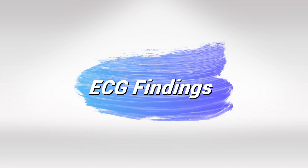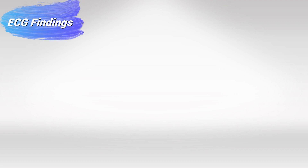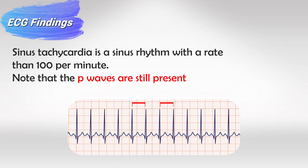Sinus tachycardia is defined as having a heart rate more than 100 beats per minute. But in cardiology we often look at it differently, as we take the patient's age into account. To do this, we simply take the number 200 and subtract the patient's age from it. Whatever number you get is the maximum heart rate that patient should ever reach. But generally speaking, anything more than 100 beats per minute is classified as tachycardia.